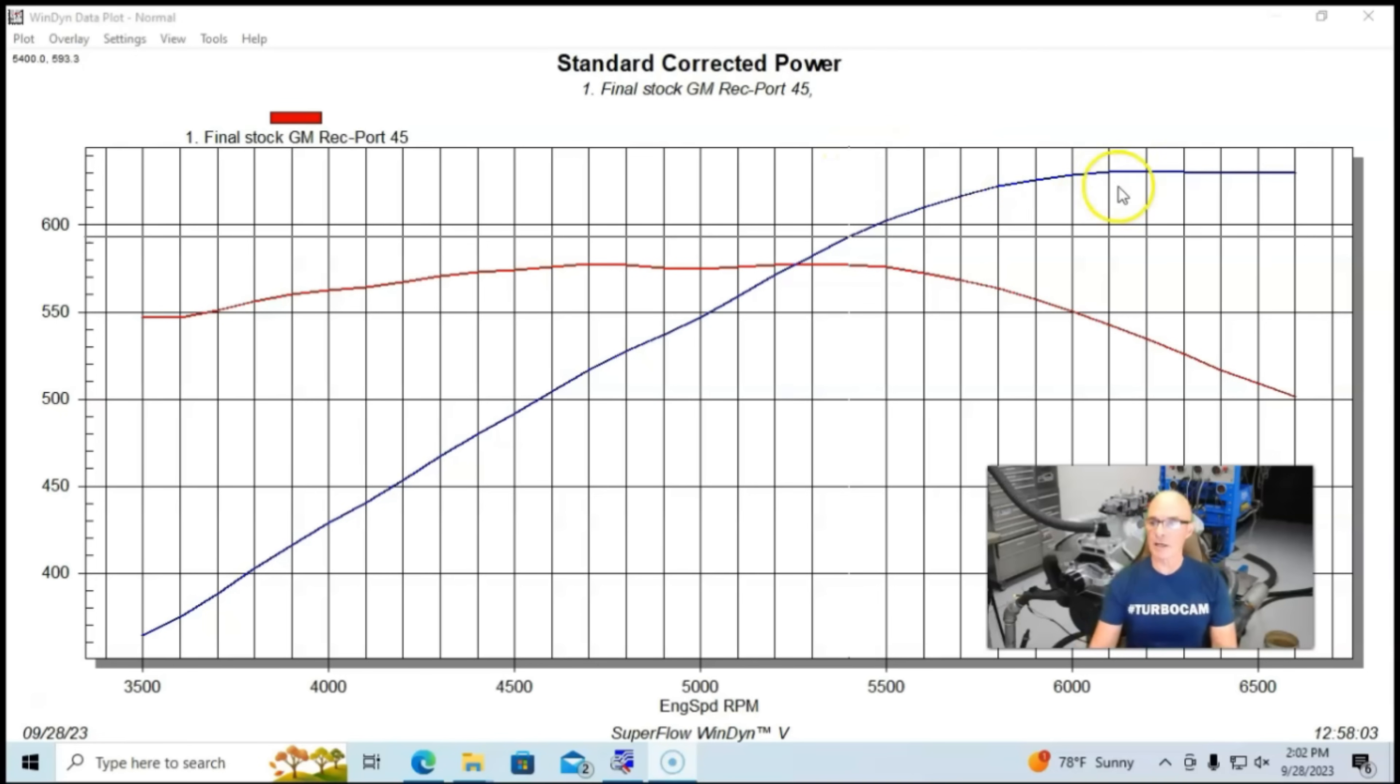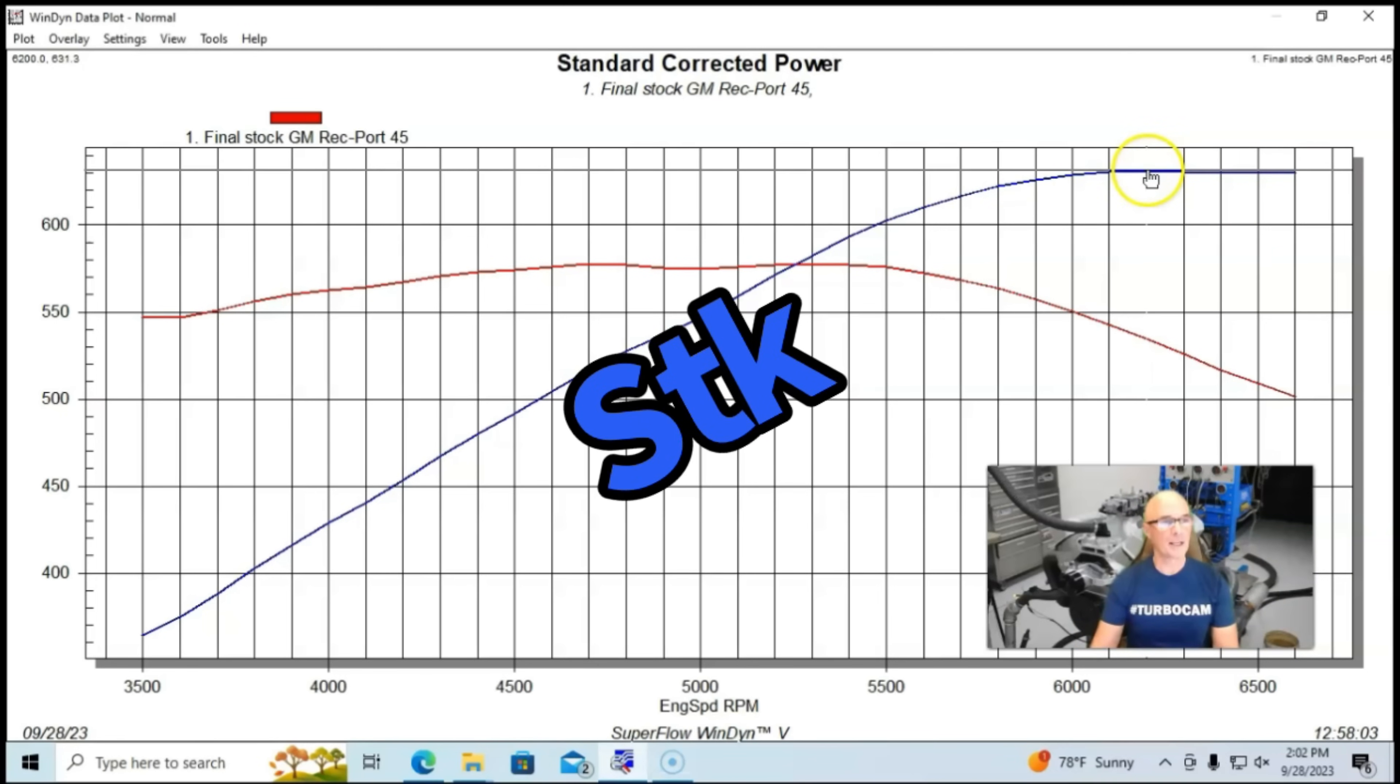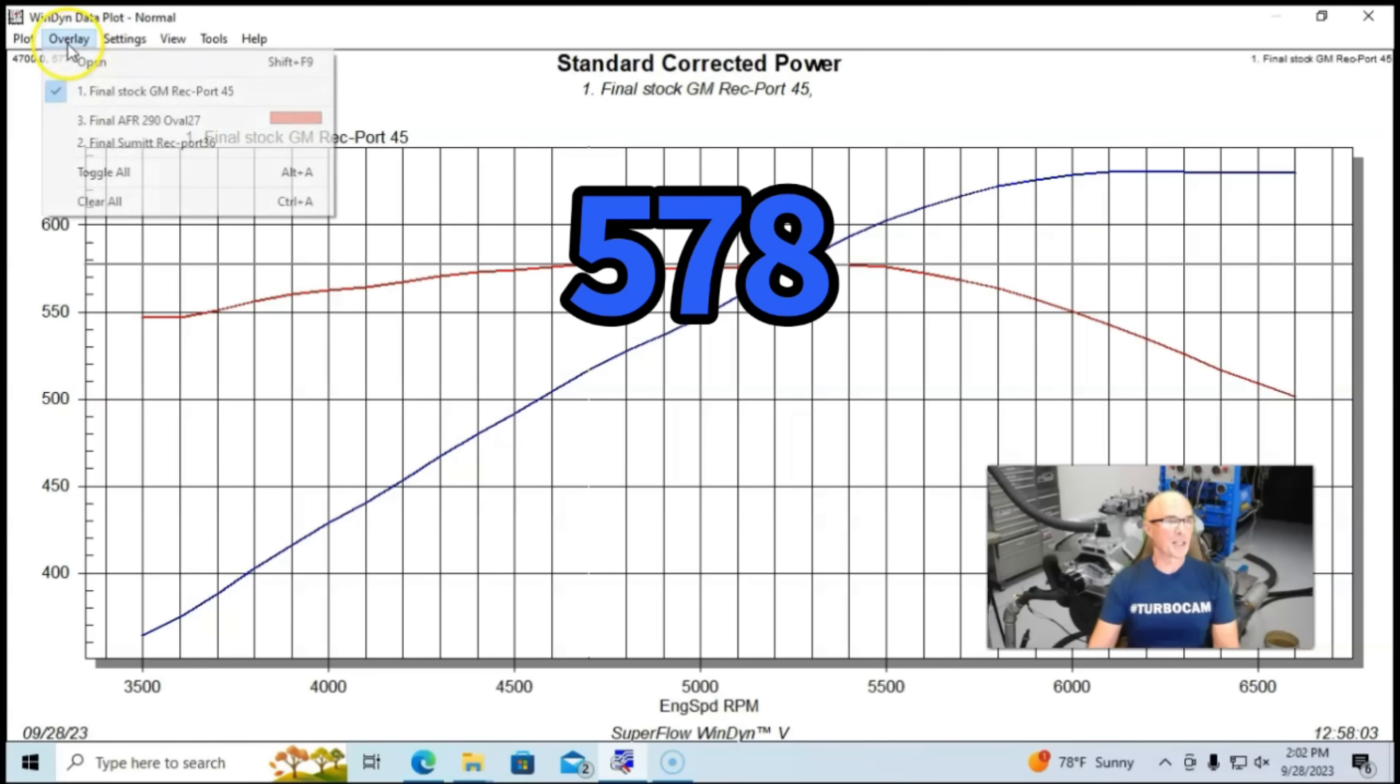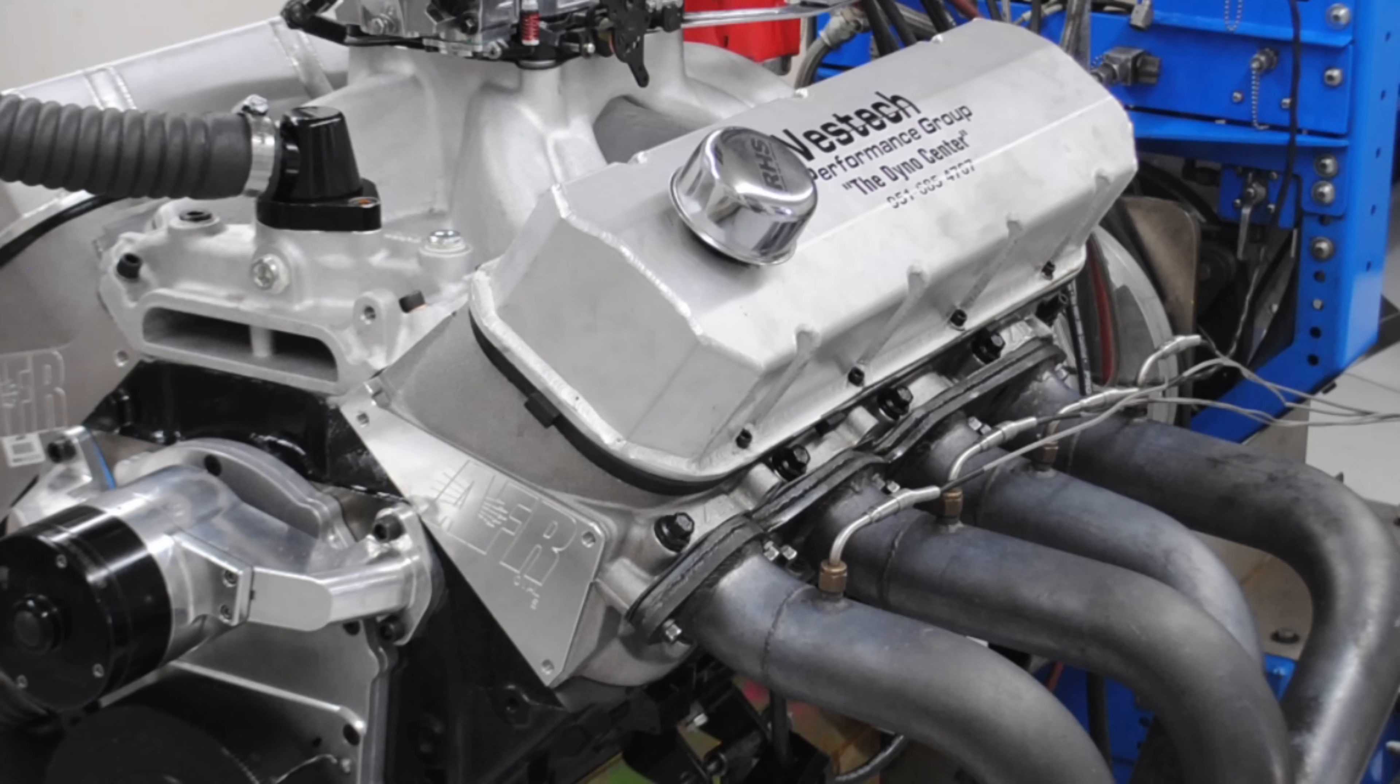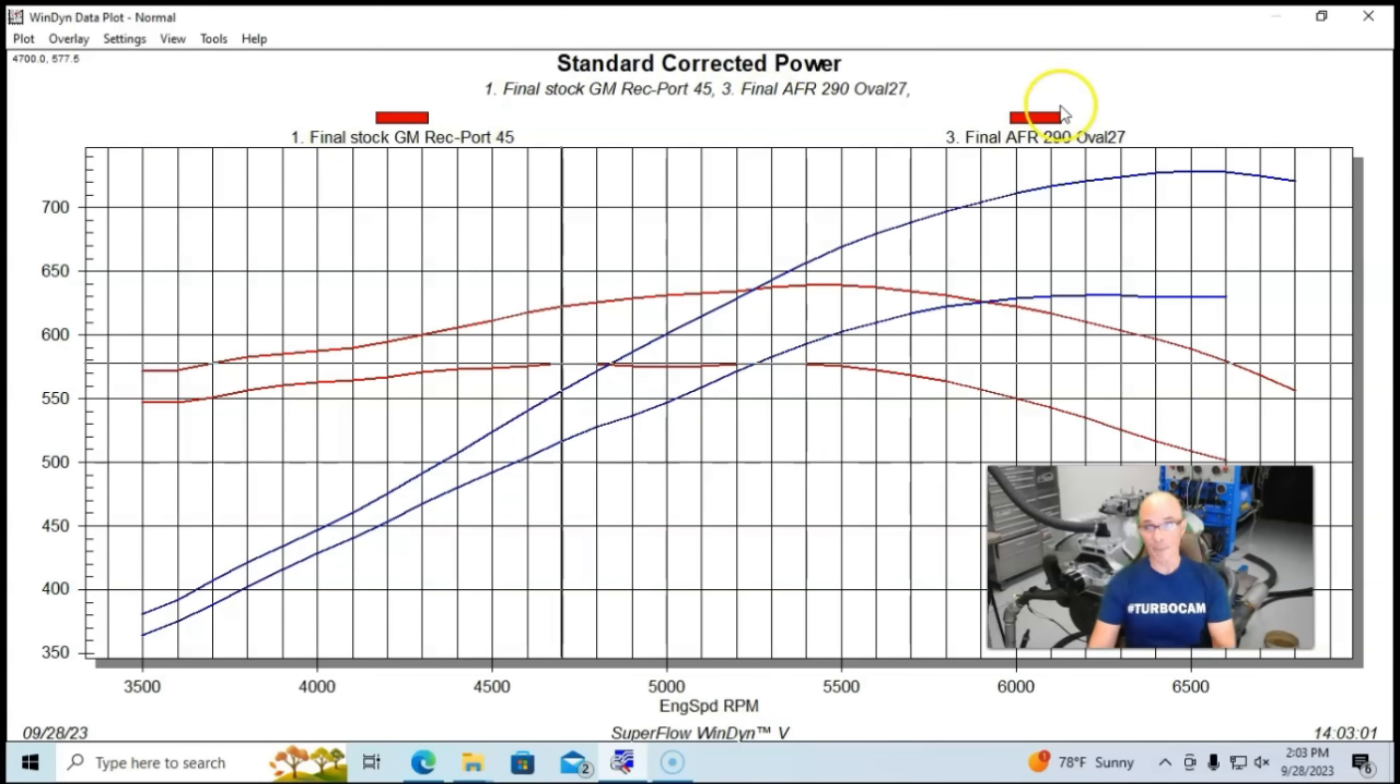Here is our combination with the factory iron heads, 631 or 632 horsepower, 578 foot-pounds. And here's what happened when we put a set of Airflow Research 290 oval port heads on it. It picked up quite a bit of power.